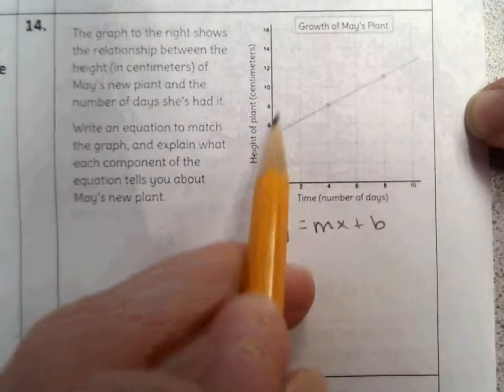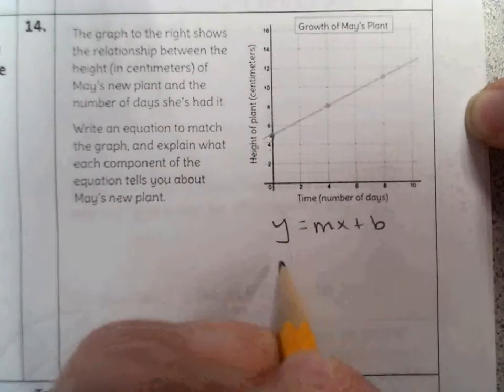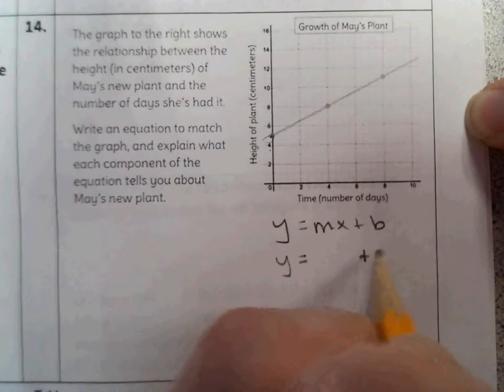The y-intercept we can find by looking just at the y-axis here, and I see 4 and 6. It's right in between. So I know the y-intercept is going to be 5.